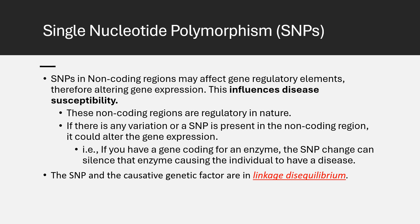For example, consider a gene that normally codes for a vital enzyme. If an SNP occurs in a regulatory region associated with this gene, it could change the gene's expression pattern — perhaps turning off the gene when it should be active, leading to a lack of essential enzyme production and potentially causing disease. Furthermore, SNPs can be in linkage disequilibrium with other genetic variations, meaning they are often inherited together because they are close to each other on the chromosome. The presence of an SNP can therefore signal the likelihood of nearby genetic factors that also contribute to disease traits, highlighting the importance of understanding SNPs in non-coding regions as active players in our genetic health.